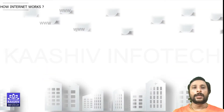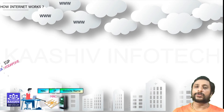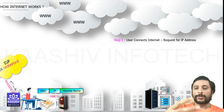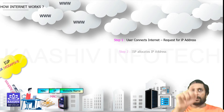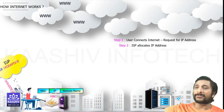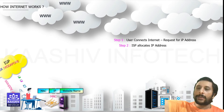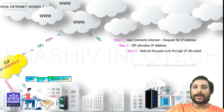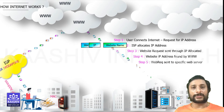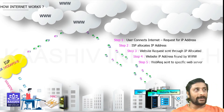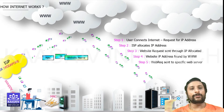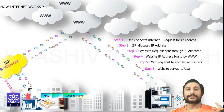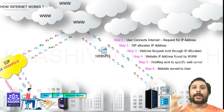Now let's see how the internet works. Once a user wants to access a website, they need three things: a MAC address, an IP address, and the website name. When you turn on mobile data, your ISP — like Jio, Airtel, or Vodafone — allocates an IP address to you. You then use that IP address to reach the World Wide Web, which identifies the website and sends the request. The website identifies the MAC, IP, and website name, confirms it's a genuine user, and sends the website back to you.